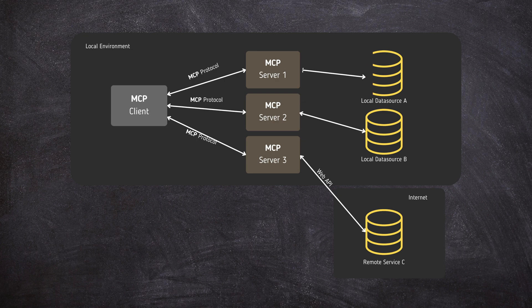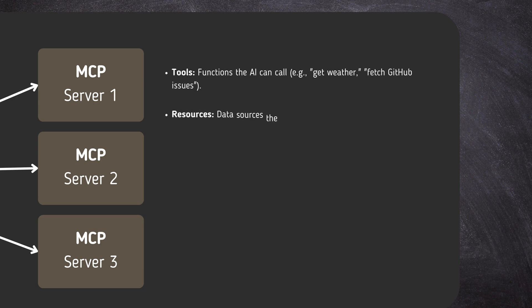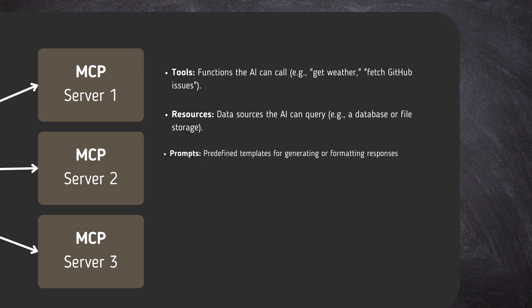The primitives include: Tools — functions that the AI can call, for example, GetWeather, Fetch GitHub Issues, or Fetch GitHub PRs. Resources — data sources the AI can query, for example, a database or file storage. And Prompts — predefined templates for generating or formatting responses. The server receives requests from the client, executes the necessary action like fetching data or running a function, and returns the result in a structured format.